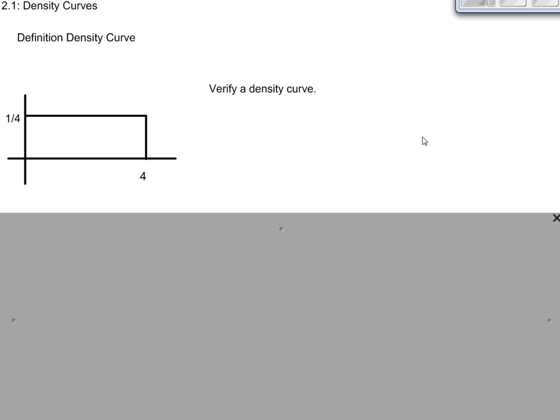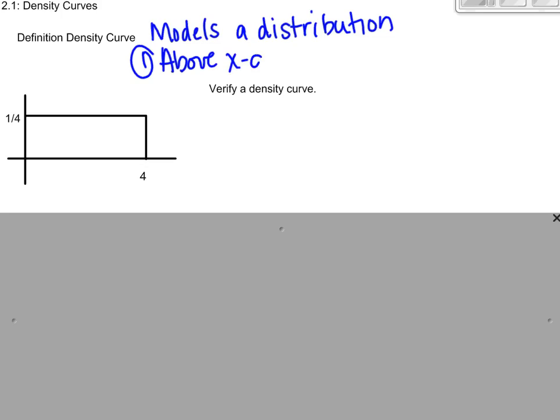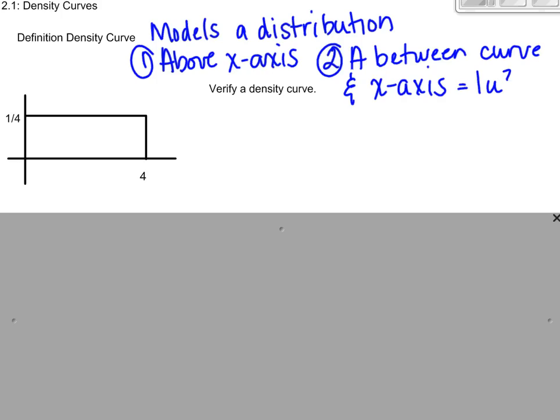So just a little intro to remind you, we had this conversation in Chapter 7 about what a density curve is. A density curve models a distribution and has two requirements: one, it's above the x-axis or the independent axis, and two, the area between the curve and the x-axis is one unit squared, or what we're going to transform into 100%.